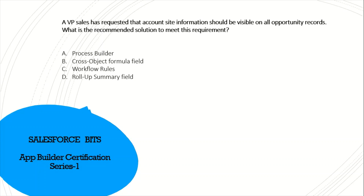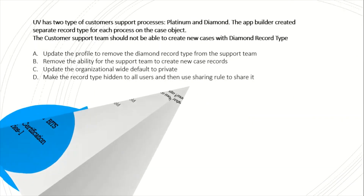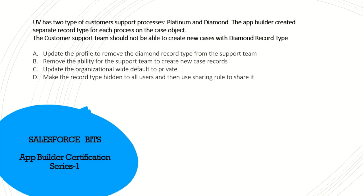A VP of Sales has requested that account site information should be visible on all opportunity records. What is the recommended solution? We can use process builder, workflow rules, or roll-up summary fields, but the most straightforward answer is a cross-object formula field. The correct answer is cross-object formula.